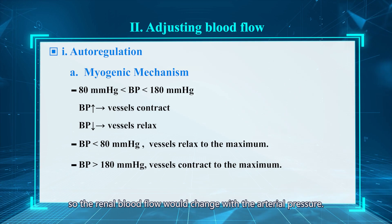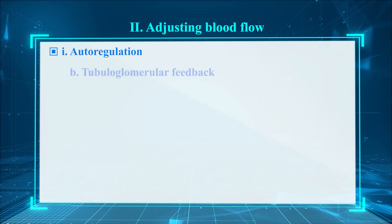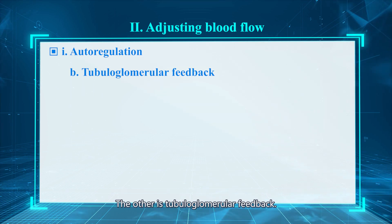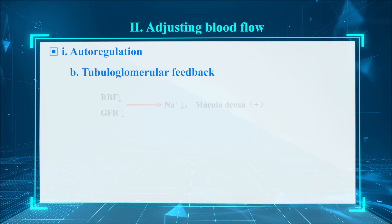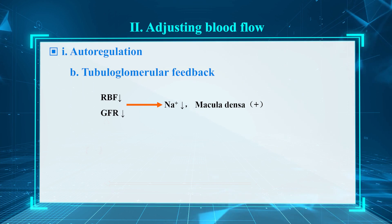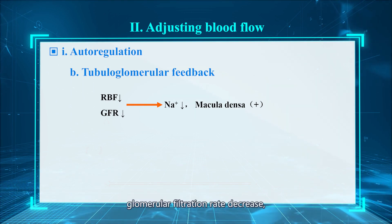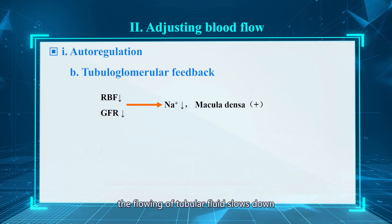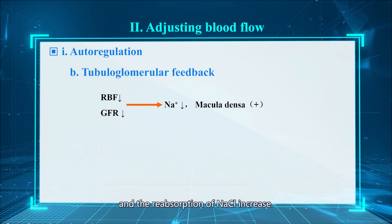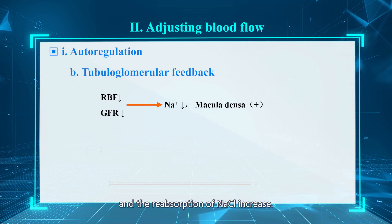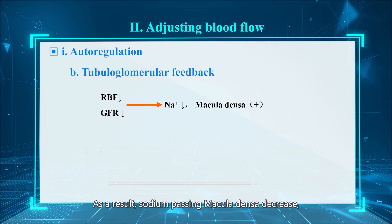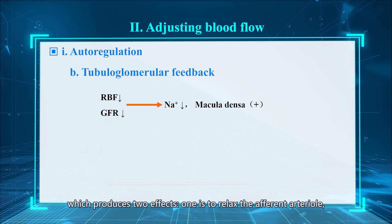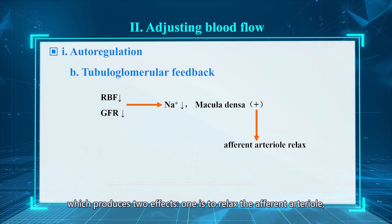The other mechanism is tubuloglomerular feedback. When renal blood flow decreases, glomerular filtration rate decreases, the flow of tubular fluid slows down, and reabsorption of sodium chloride increases. As a result, sodium passing the macula densa decreases, which produces two effects: one is to dilate the afferent arterioles.